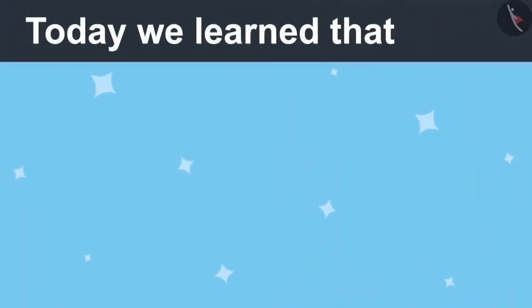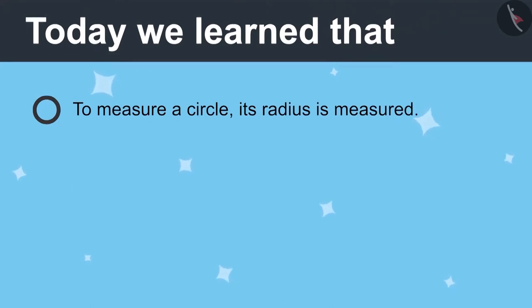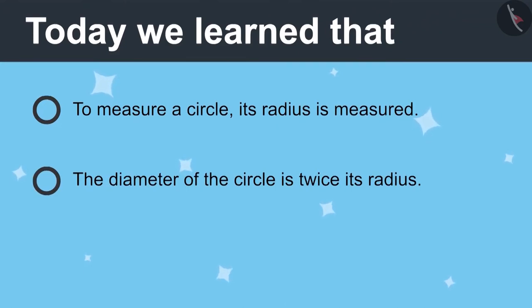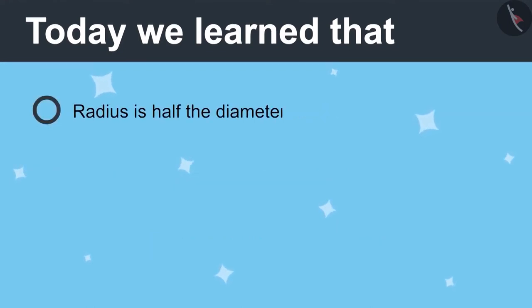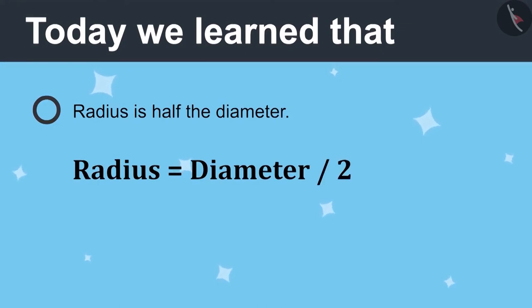Today we learned, to measure a circle, its radius is measured. The diameter of the circle is twice its radius. Diameter is equal to radius multiplied by 2. Radius is half the diameter. Radius is equal to diameter divided by 2.